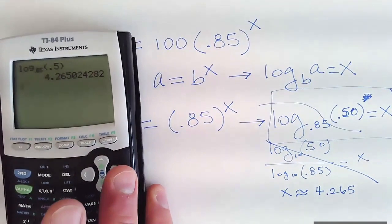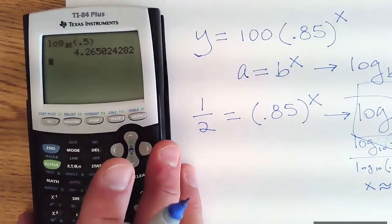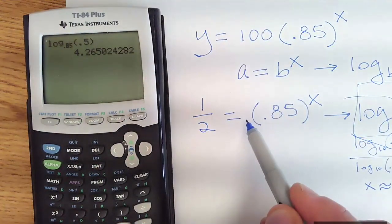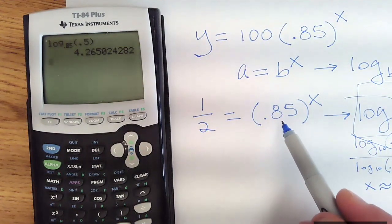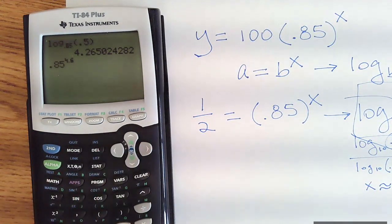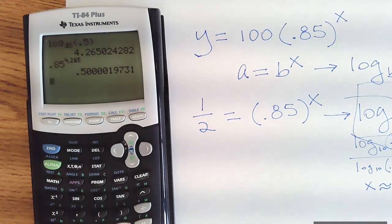Now, if I go back to my original problem, when is a hundred going to be 50, or when is one going to be a half? If this is my constant multiplier, well, if I raise 85 hundredths to my solution, four, two, six, five, I should get a half. And that's very close to a half.